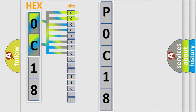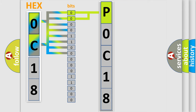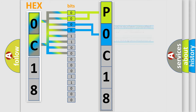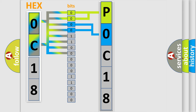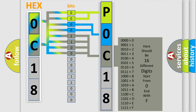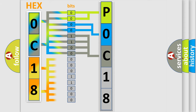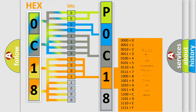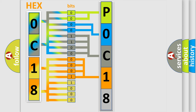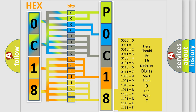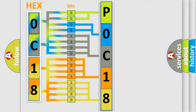By combining the first two bits, the basic character of the error code is expressed. The next two bits determine the second character. The last bits of the first byte define the third character of the code. The second byte is composed of a combination of eight bits. The first four bits determine the fourth character, and the combination of the last four bits defines the fifth character. A single byte conceals 256 possible combinations.